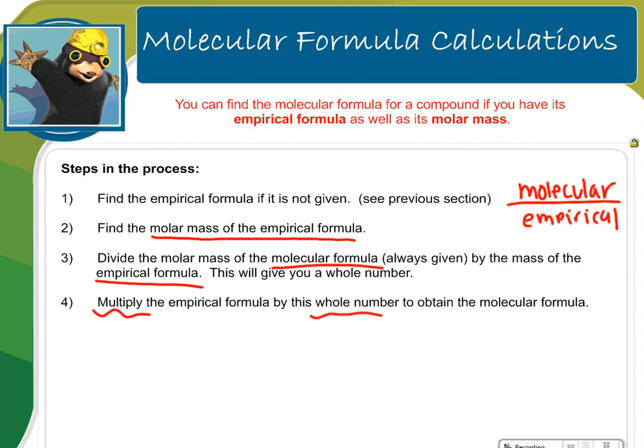So molecular formulas. You can find the molecular formula for compounds if you have its empirical formula as well as its molar mass. So remember the molecular formula is not the reduced one, it's the true formula. So we can use the empirical formula to get us there. So first you need the empirical formula. If you don't have it, then you need to get it. So I just showed you how to do that. So you should feel comfortable.